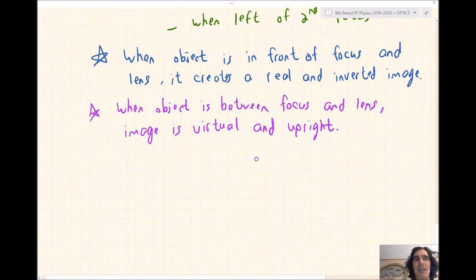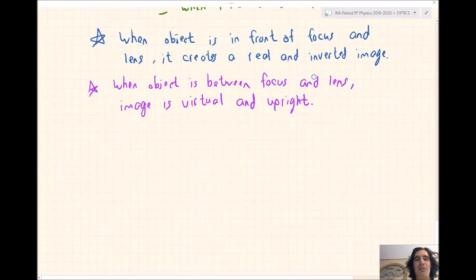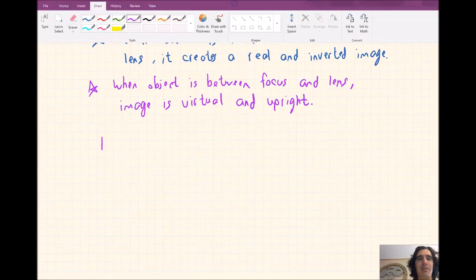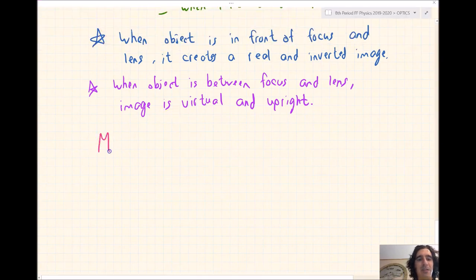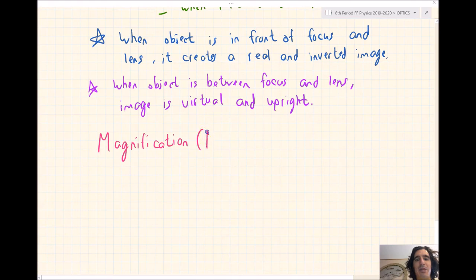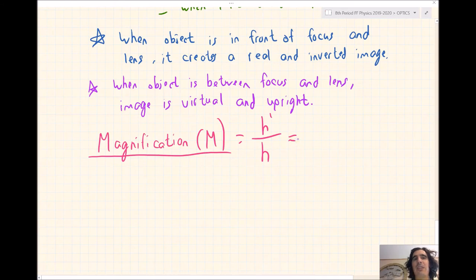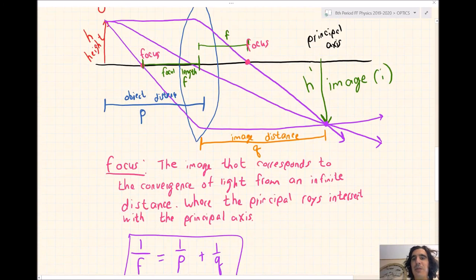We can also calculate the magnification of the image — how much it grows or shrinks. Magnification M equals h prime (image height) over h (object's height). Or we can calculate it based on distances: M equals negative q over p, the image distance over the object's distance. The reason it's negative is because if we get a real image it's going to be inverted, so that negative signifies it's upside down.